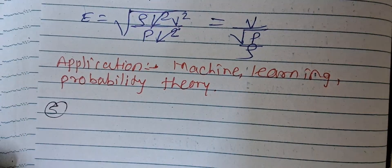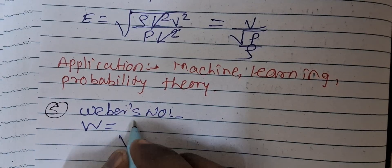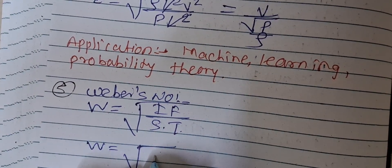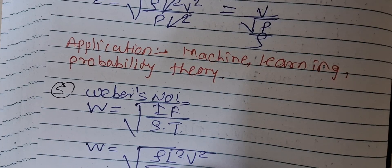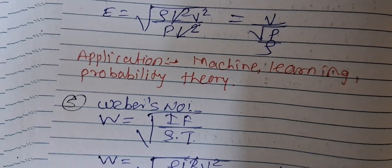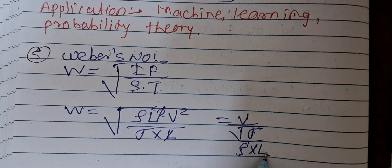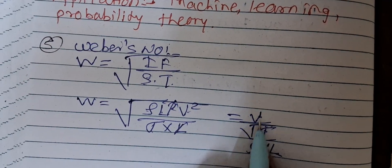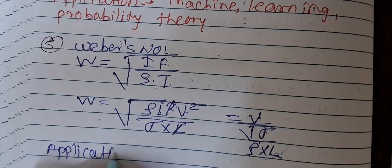The fifth definition is Weber's number, denoted by capital W. It is the ratio of inertia force to surface tension. Formula: W = √(ρL²V² / σL). L cancels, V² becomes V, giving W = V / √(σ/ρL). This gives the Weber number formula.